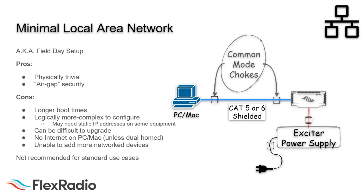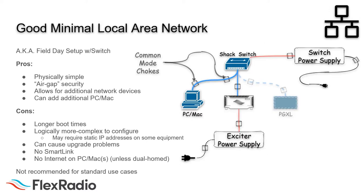We can improve on the single-cable topology by adding a low-cost network switch, which eliminates several disadvantages. FlexM models employ this very topology when operating stand-alone — inside the radio is a switch with a cable connected to the front panel, with the other end connected to the radio itself. Adding a switch supports more than two network devices, like an M-model panel, a PGXL, or another complete operating station. However, many of the same disadvantages apply, and we don't recommend this topology for the ham shack.